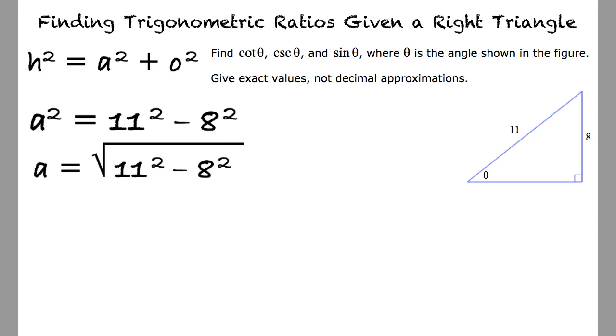equals the square root of 11 squared minus 8 squared, resulting in a final answer of a equals the square root of 57.